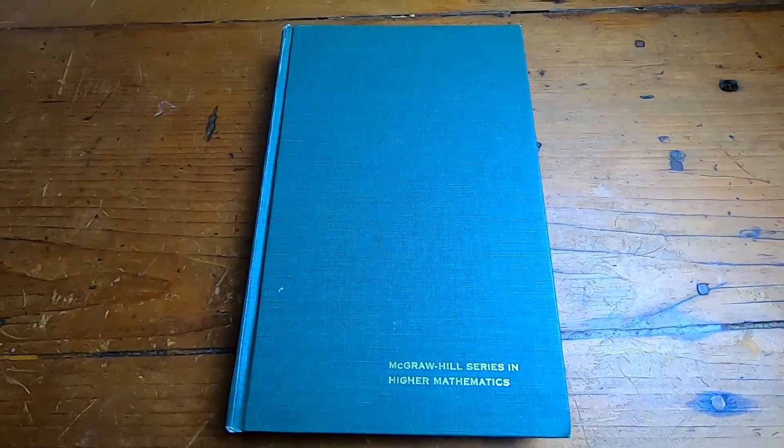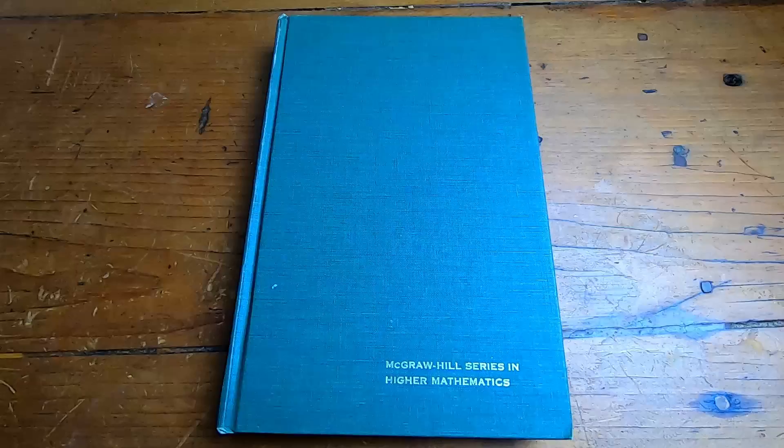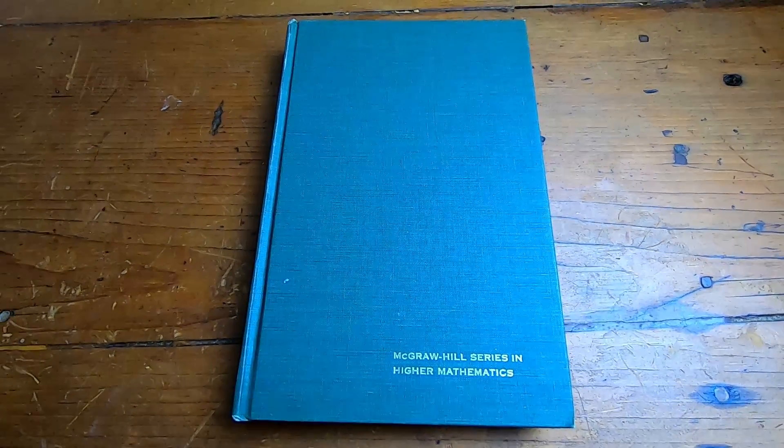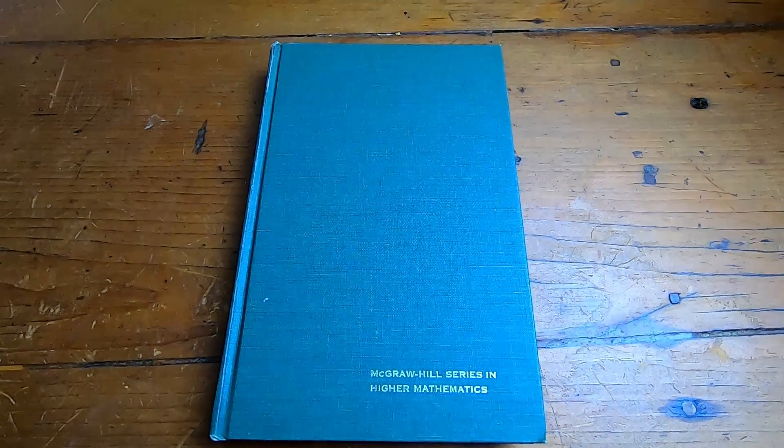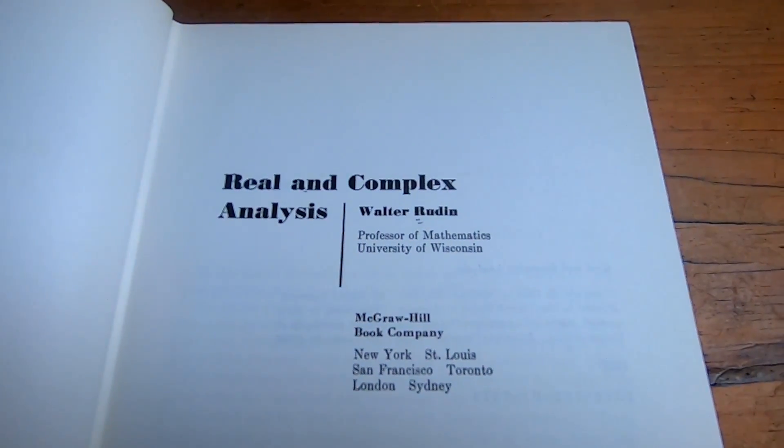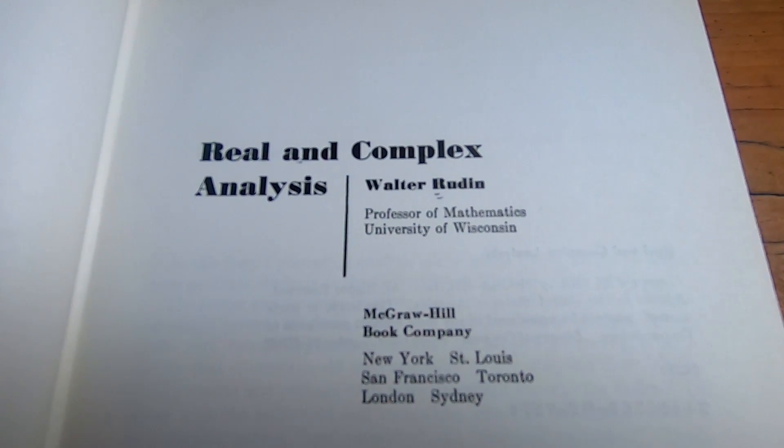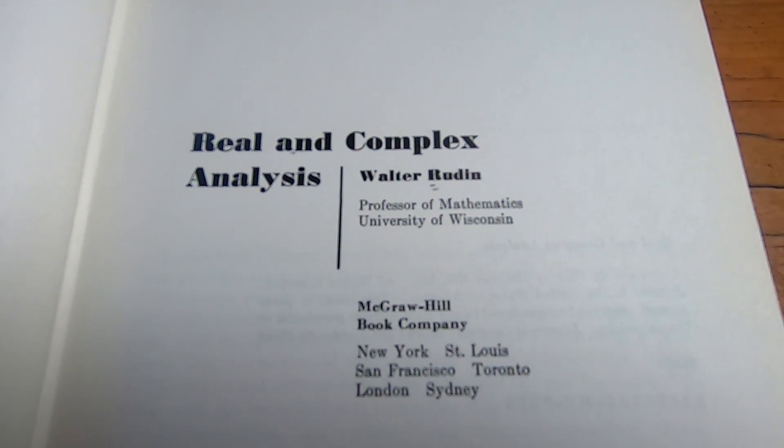This is by far the most popular book on measure theory ever written. Let's take a look inside this book. You'll notice that the title is not on the cover, at least not on my edition. So this is the book. It's Real and Complex Analysis by Walter Rudin.